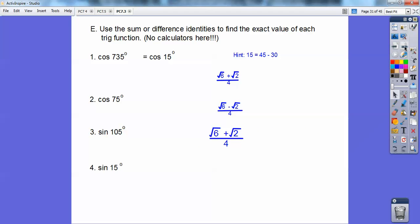Sine of 15, well that one's just like cosine of 15. That's going to be 45 minus 30. So I'm going to use my sine ratio and I get that as the answer.